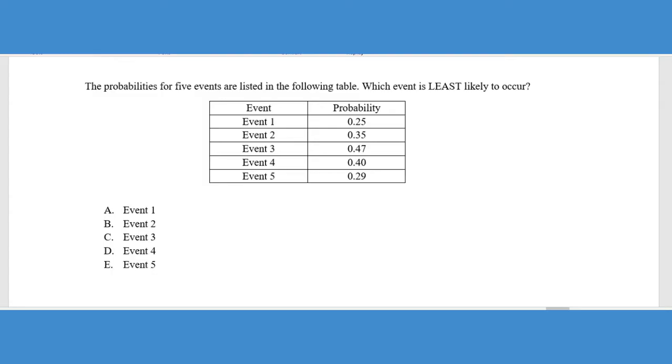It says the probabilities for five events is listed in the following table, which event is least likely to occur. Here's the thing we need to understand: I told you that probabilities could be a decimal, a fraction, or a percent. They gave us all of our probabilities in decimal form here. The probability or odds of something happening, if we're in decimal form, go from 0 to 1.0, or 0% to 100%, with 0 being no chance of it happening. 1.0 or 100% means it's absolutely going to happen. Anything in between has different odds of happening. The smaller the number, the lower chance of it occurring; the higher number, the better chance of it occurring.